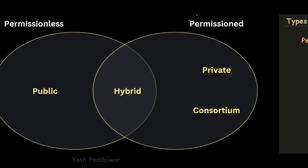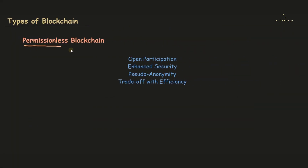The first broad type of blockchain is permissionless blockchain. As the name suggests, whoever participates in that blockchain network won't be required to take permission from any authority, because no authority governs this type. Open participation is present and each node has equal rights to participate. This blockchain is well known for its enhanced security because there are no restrictions for any node to participate.